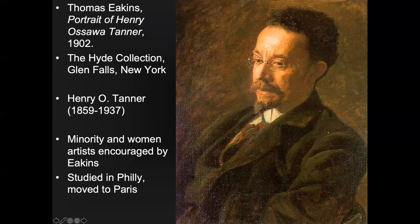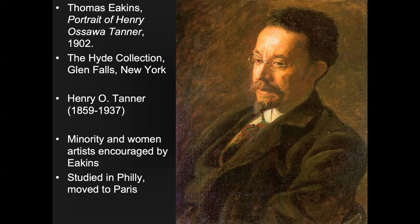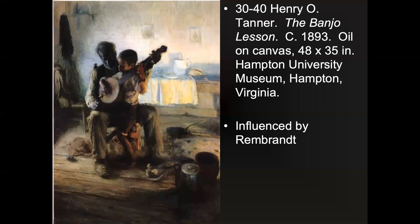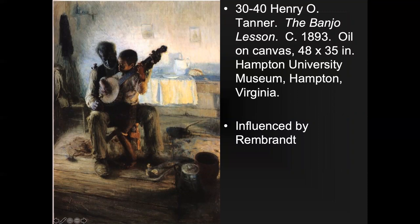This is Henry Ossawa Tanner. Besides training women, Eakins also trained Black artists — and Tanner was one of them. He said everybody should be able to go to school and get training in art. Tanner studied in Philadelphia, then moved to Paris where the action was, but still did subjects close to him — portraits of family or people in his neighborhood. He shows people who aren't living in the best conditions, like a grandfather showing his grandson how to play the banjo. He was influenced by Rembrandt — you can see it in the quiet moments and soft paint handling with a mysterious effect.